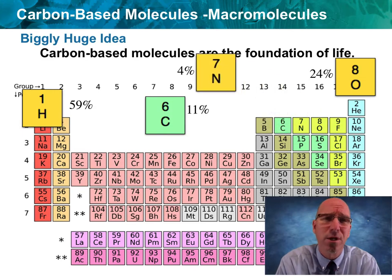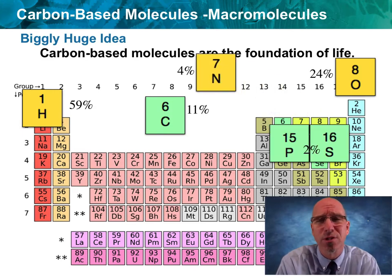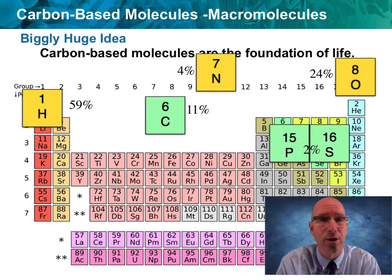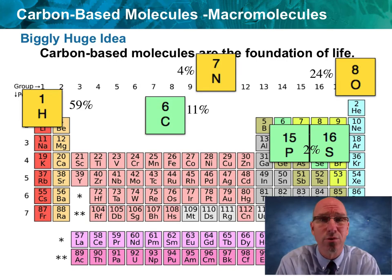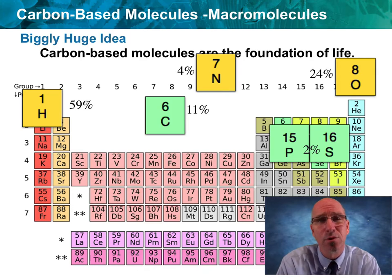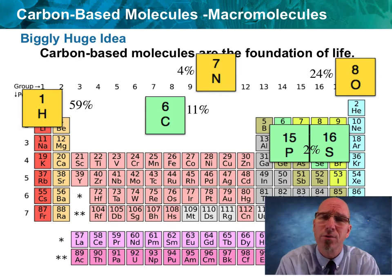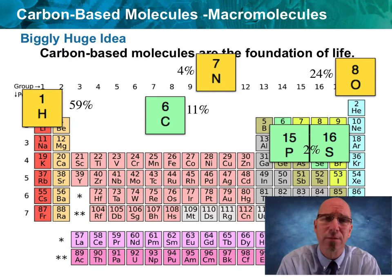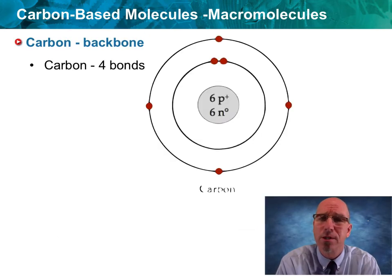Nitrogen is about 4%, and then phosphorus and sulfur combined are about 2%. Now there are some other elements involved — iron, magnesium, calcium in your bones, sodium, chlorine, and potassium. So we have those other elements involved, but these are the six major elements going to be involved in the macromolecules of carbon. And it starts with carbon.